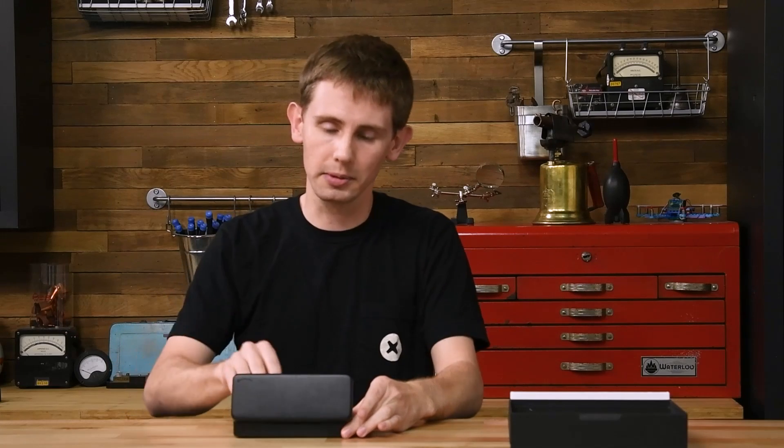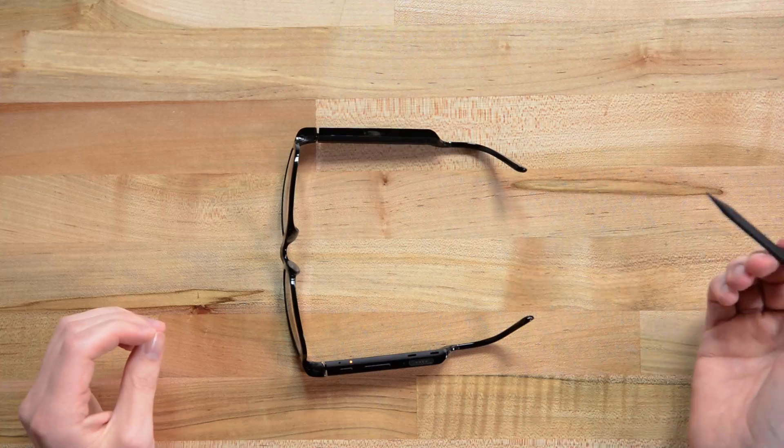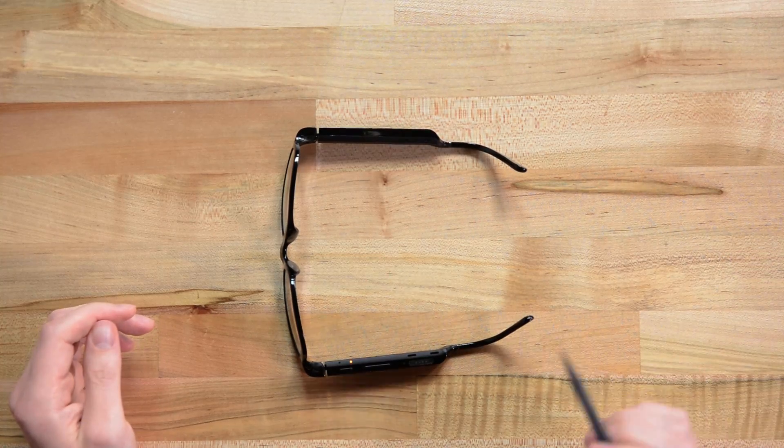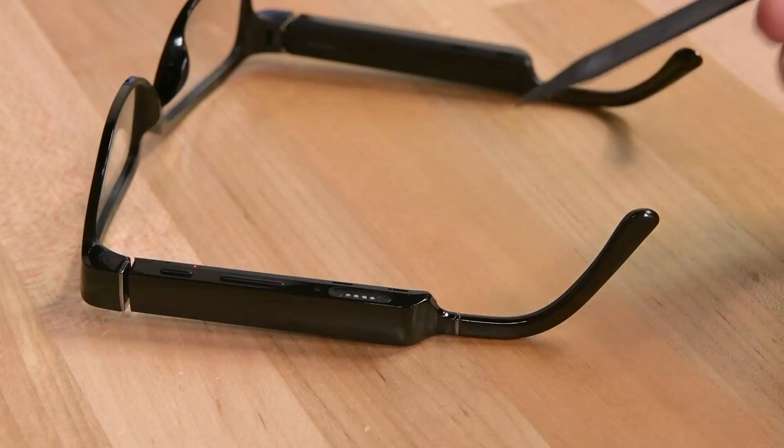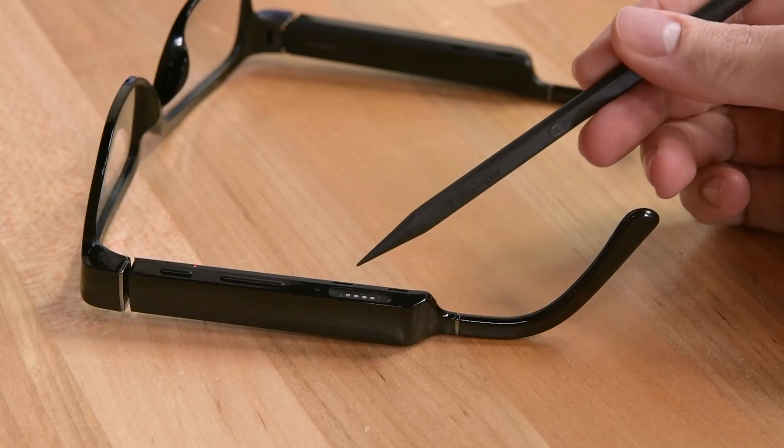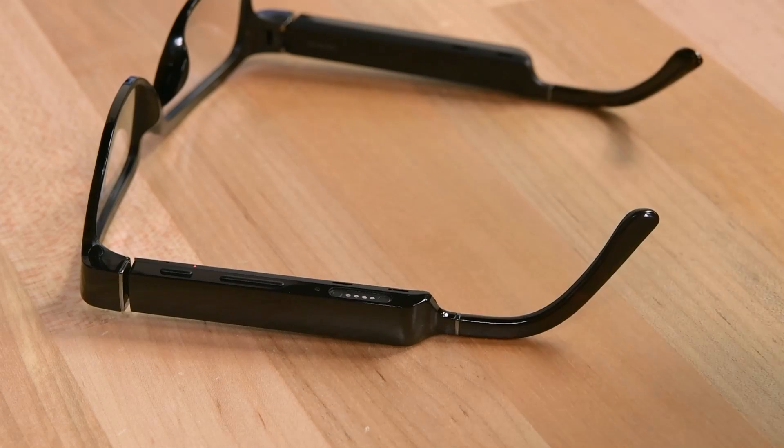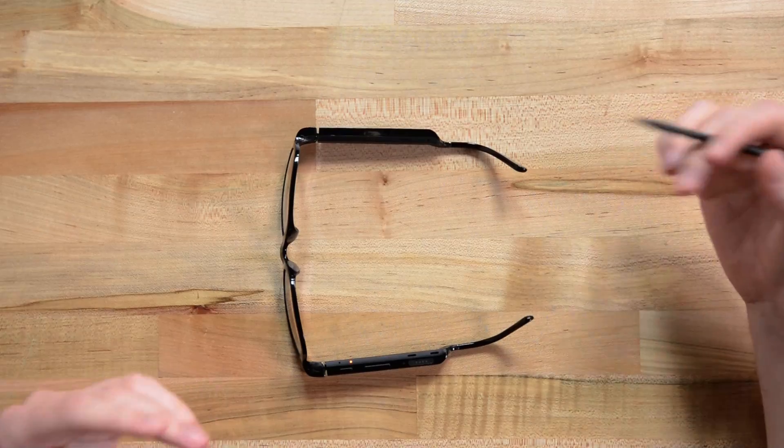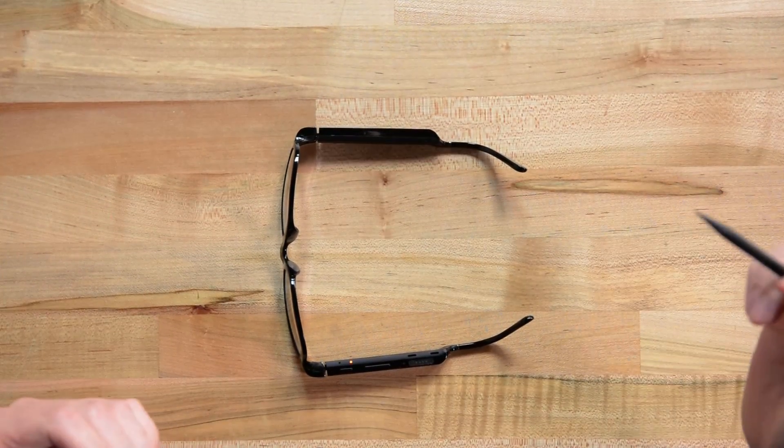This is basically a pair of glasses with Amazon's digital assistant built-in, so you can put them on and ask it about the weather or upcoming events or take a phone call or anything like that. Interestingly, these do not use bone conduction to get sound into your ears. There are four microspeakers, two on each arm here, and those fire sound downward into your ears so that you can hear what the assistant is saying to you.